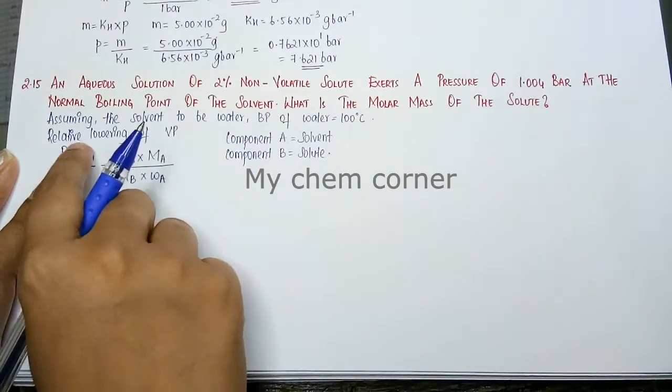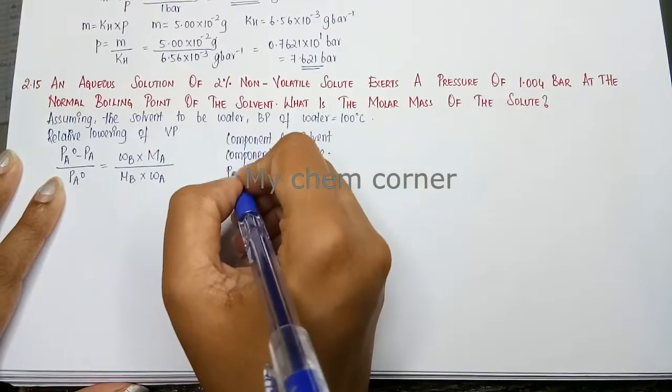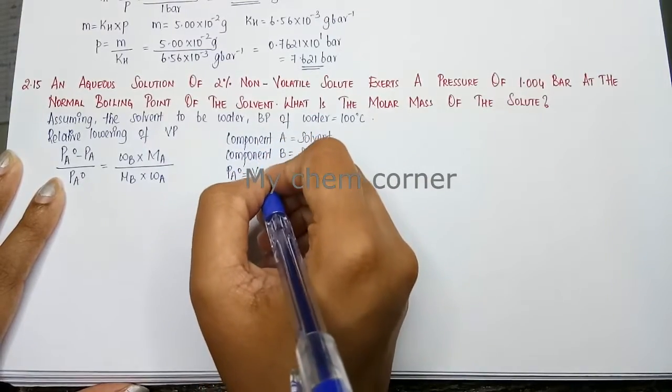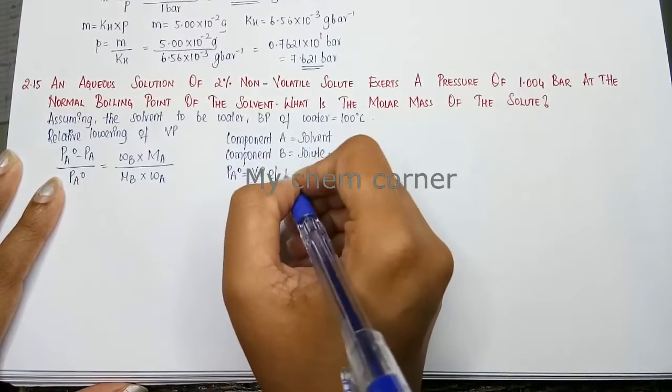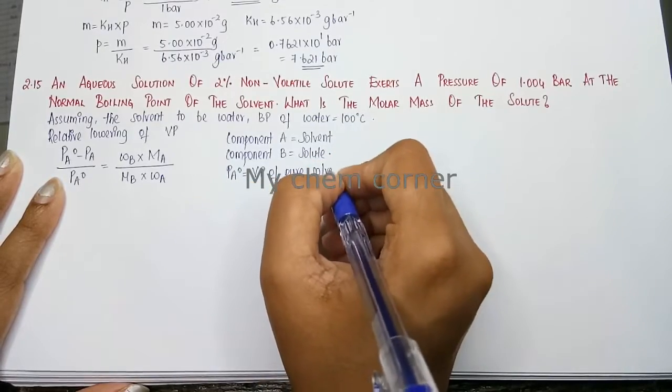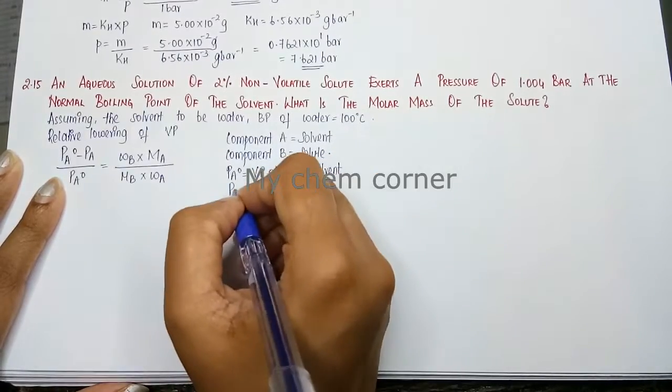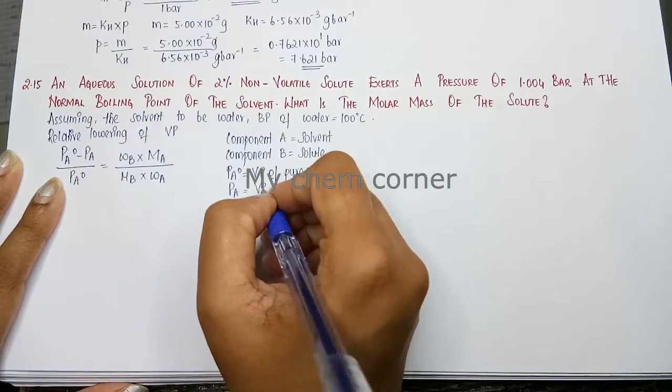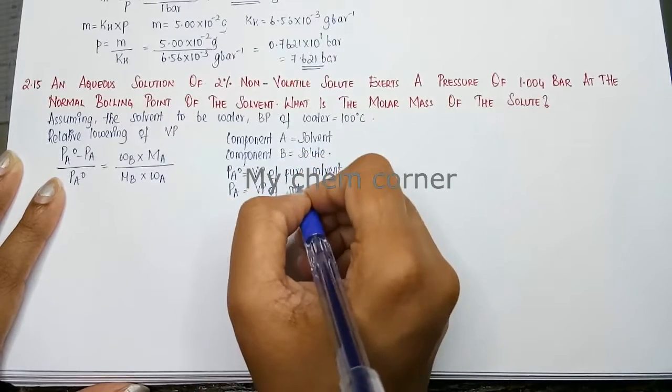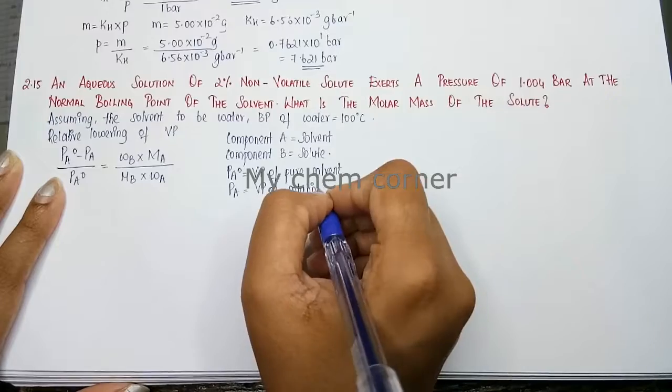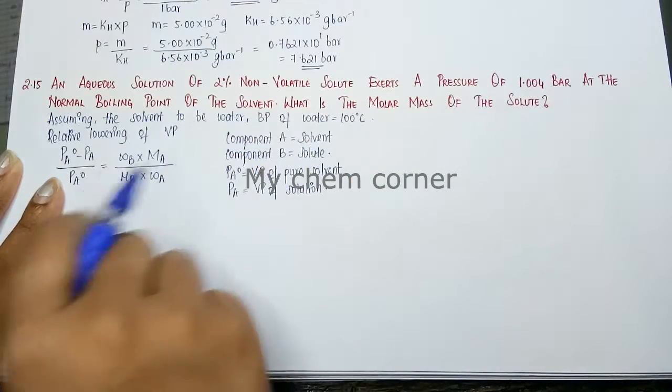Now pa0 is vapor pressure of pure solvent. And pa is vapor pressure of solution. So we know what each term means. Let's substitute the values.